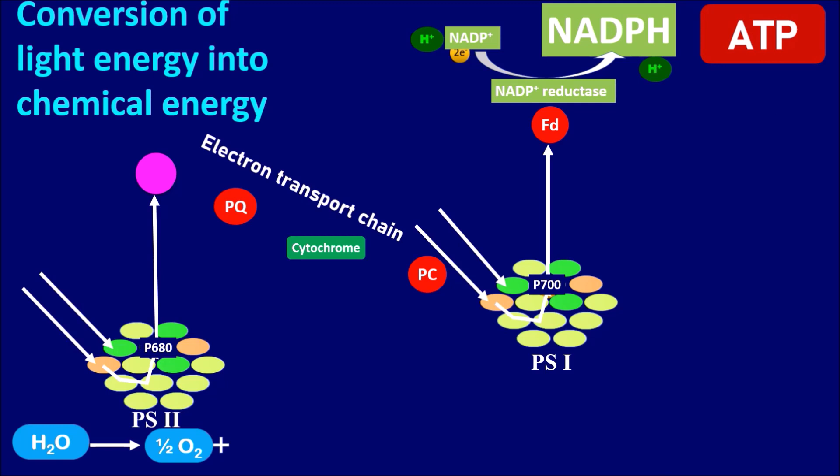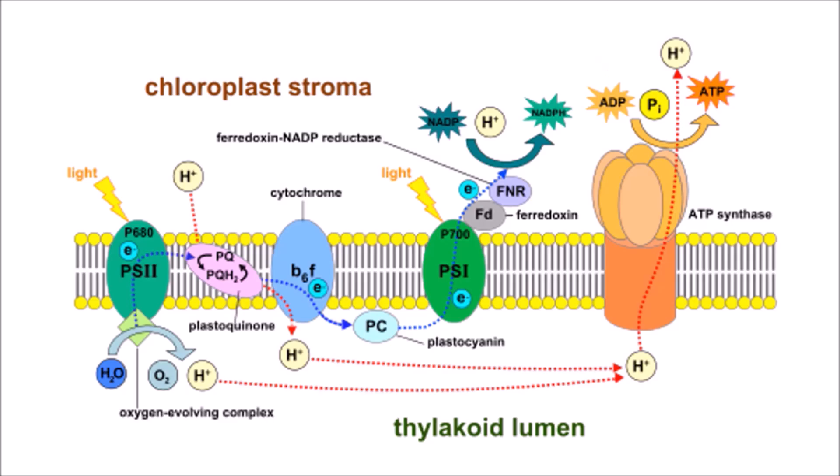which is again an energy rich compound. These two energy rich compounds such as NADPH and ATP are the final results of light reaction which are used in the process of dark reaction. This is how the photochemical phase is represented in the thylakoid membrane involving photosystem 2 and photosystem 1.